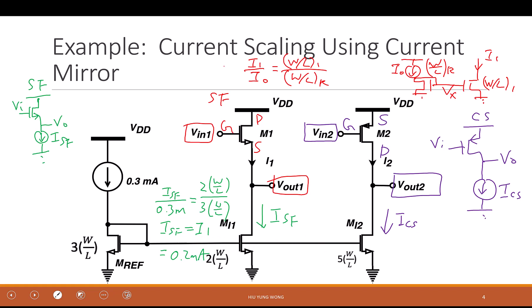Five third of this one. Everyone, any questions? Right? So again, we repeat. ICS divided by 0.3 milliampere equals to five W on L divided by three W on L. So ICS, which is I2 equal to 0.5 milliampere. Okay? Just like what you said.